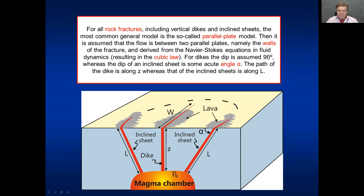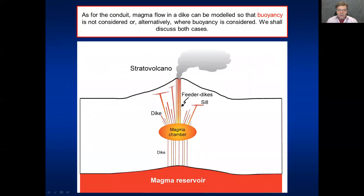For dikes, we assume the dip to be 90 degrees, so this is a dike here, vertical, and we use s for the coordinate here or for the path. And for an inclined sheet, we assume that along the path, not necessarily at the surface, when it comes to the surface itself, it must bend and become vertical really at the surface. But below that, the dip is inclined and the dip is given by the angle alpha here. And we assume that the flow is along the length L.